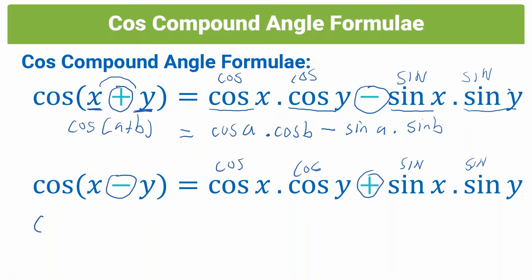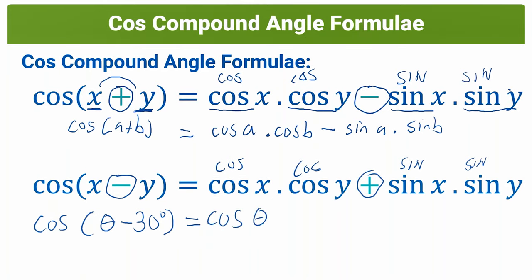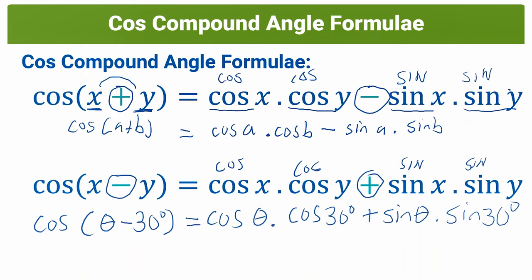For example, if we had cos(θ − 30°), that would be cos θ times cos 30°, and now we change the sign — it becomes plus — so plus sin θ times sin 30°. Note that you don't have to memorize these formulae; they are given in the formula sheets in the exam. It's just very good to memorize them as it saves time. For a cos compound angle formula: cos cos sin sin, change in sign.